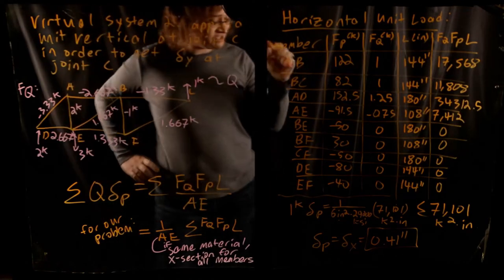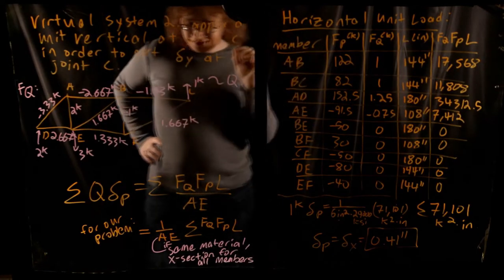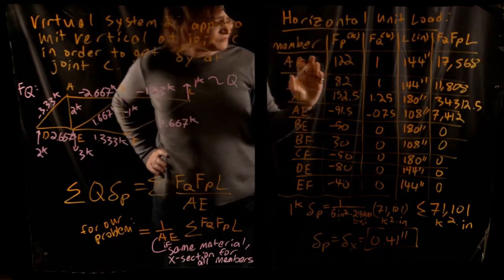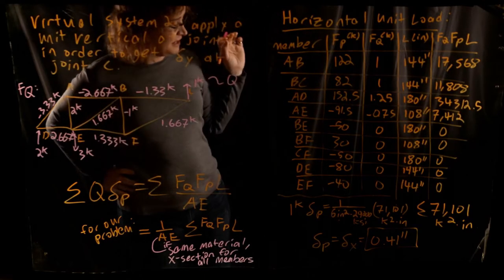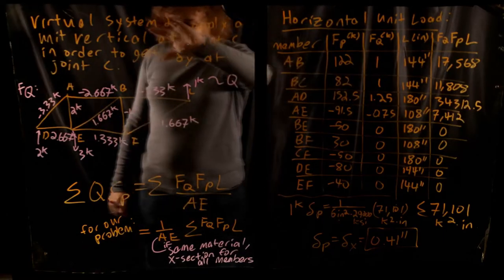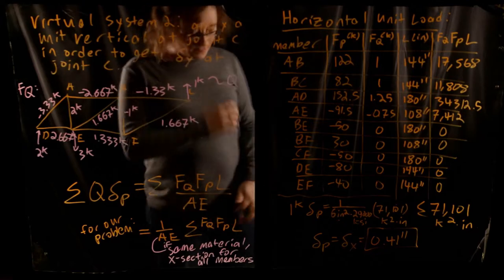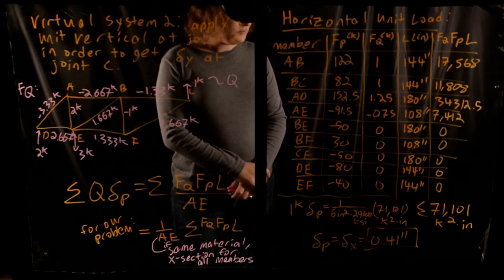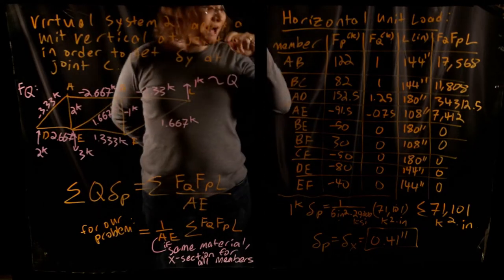Now we move on to the same table but for the vertical unit load case. We only need to change the virtual loads column and recalculate the summation — the real FP column and the lengths stay exactly the same, since the real system is unchanged. A student asks where the FP column numbers came from: these are the forces found when we applied the actual loads — the 42-kip horizontal and 30-kip downward force at C — to the truss and solved for all internal forces.